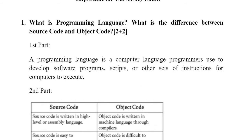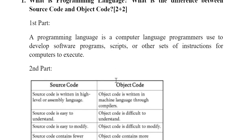The first question is: what is a programming language, and what is the difference between source code and object code? This is asked for two marks, so you just need to write the definition. A programming language is a computer language that programmers use to develop any software, scripts, or programs — or other sets of instructions for computers to execute.